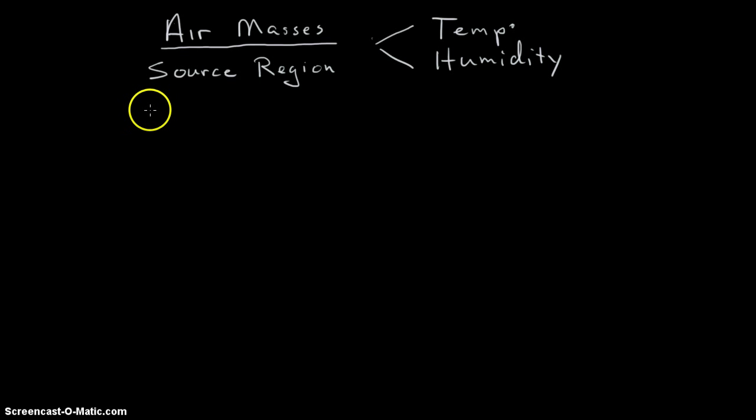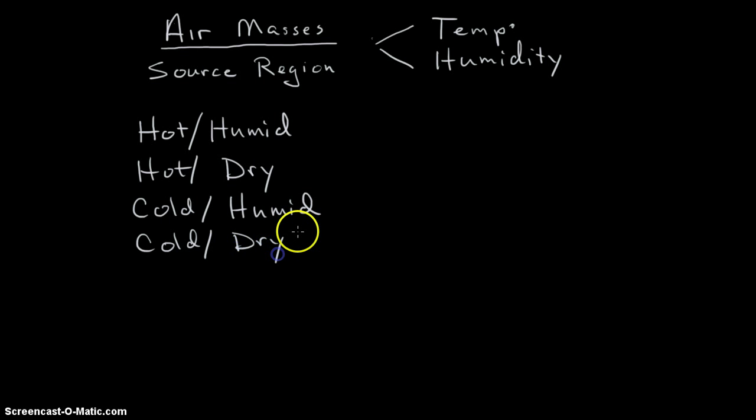So that leaves us with just a few options. The air mass could be hot and humid or moist, it could be hot and dry, it could be cold and humid, and it could be cold and dry. And then there's a fifth option where it could just be really, really cold. And this is my font for cold. I hope you recognize it.